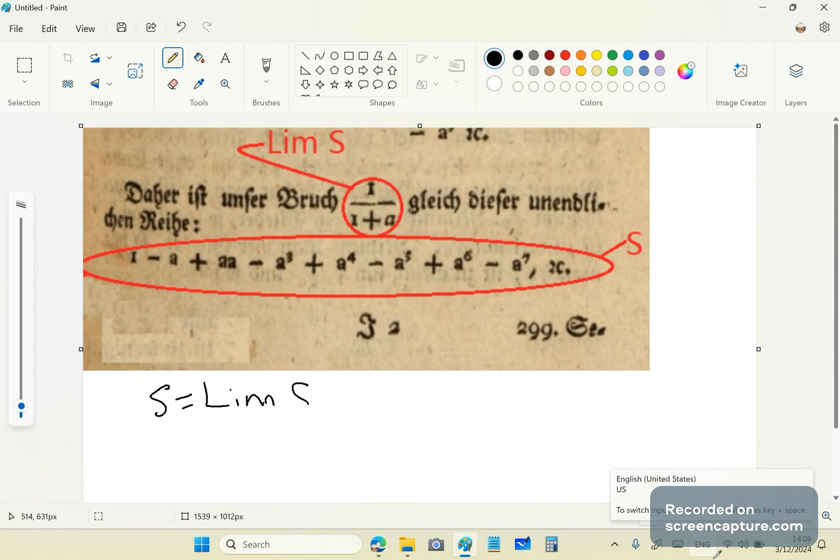He's saying that s is equal to lim s. Well, first of all, that's false, because s is this sequence, which doesn't have an end and can't be summed. And so this is a sequence, and this is a limit. A sequence and a limit are two different things.